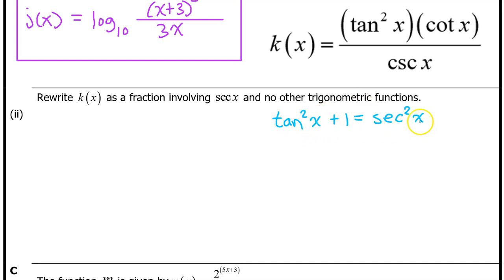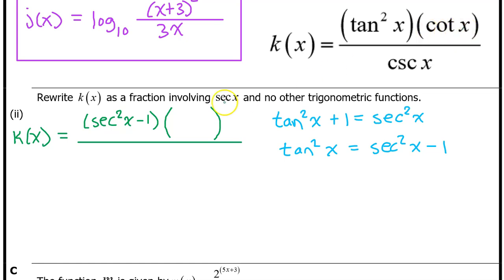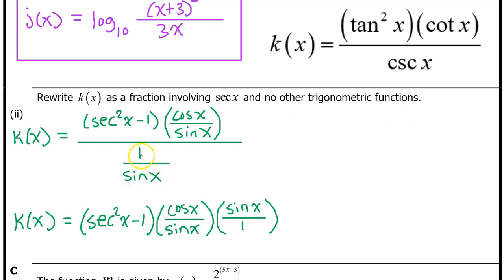We use this identity to replace tangent squared with an expression involving secant. Subtracting 1 from both sides: tangent squared x equals secant squared x minus 1. So let's replace tangent squared x with secant squared x minus 1. Also, cotangent x is cosine x over sine x, and cosecant x is 1 over sine x. Dividing by a fraction means multiplying by the reciprocal, so dividing by 1 over sine x is the same as multiplying by sine x. The sine x in the numerator and denominator will cancel.